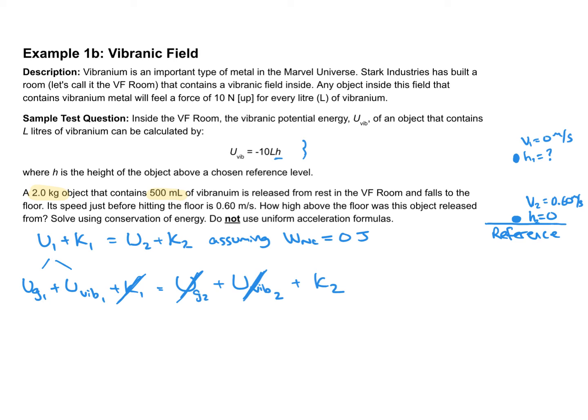I'll substitute the expressions in. Gravitational potential energy is mgh. The expression for this fictional field is negative, so I'll change it to minus negative 10Lh1, where L stands for the liters of vibranium.